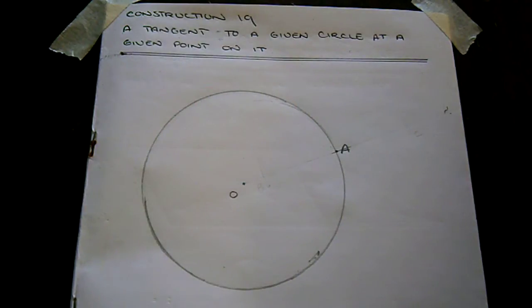Construction number 19: a tangent to a given circle at a given point on the circle.